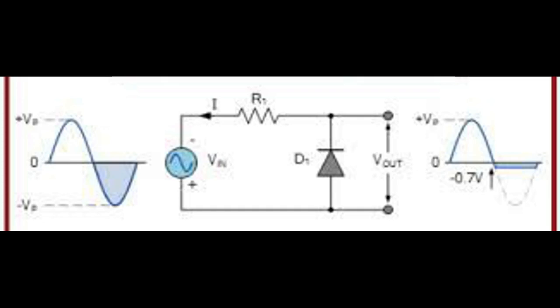During the positive half cycle of the input waveform, the diode D is forward biased so the positive half cycle appears across the output.